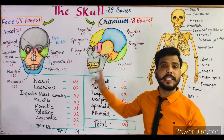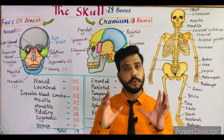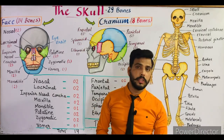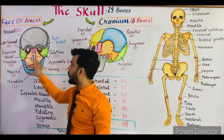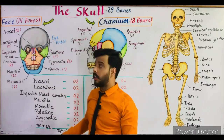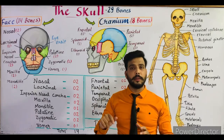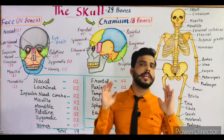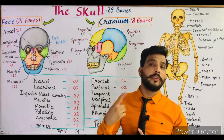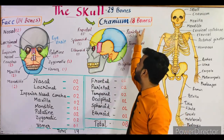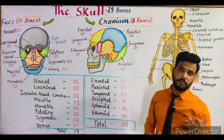The skull consists of a total of 29 bones, and these bones can be divided into two parts: the facial bones and the cranial bones. In the face there are 14 bones, as I have shown in this diagram with different colors. The cranium is the upper part of the skull, and the bones present in the cranium are known as cranial bones — these are 8 in number.